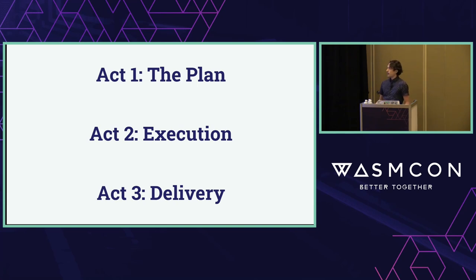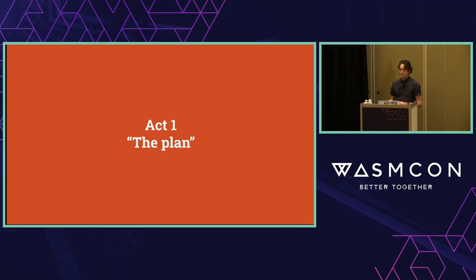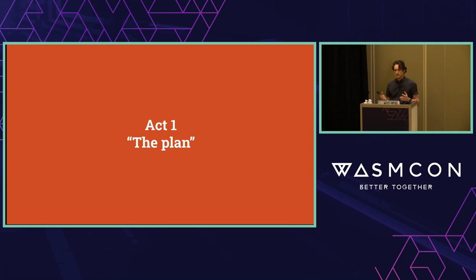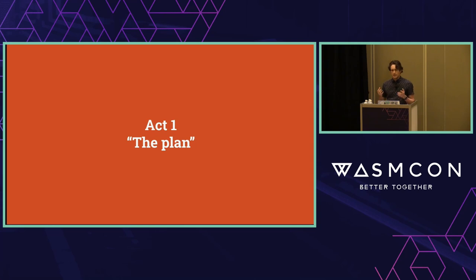We've got a three-act plan: plan, execution, and delivery. The first thing I want to do is talk about what we're trying to build. Whenever you're trying to build a complex system — like a collaborative, eventually consistent, synchronized database in the browser — you need to have some kind of architectural plan.